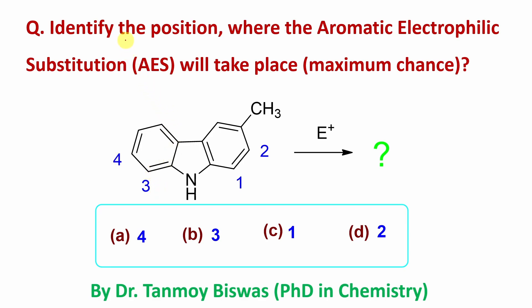Identify the position where aromatic electrophilic substitution will take place — meaning where is the maximum chance. If you look at this molecule, it's an aromatic molecule. I have selected positions 1, 2, 3, 4 — you can say 5, 6, 7. Why not position 8? Because at position 8 there is a methyl group, so substitution is not possible there. Now, where will it take place?